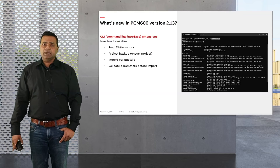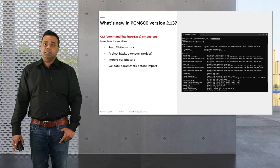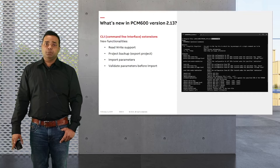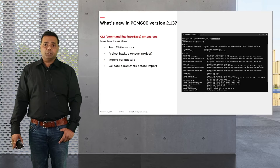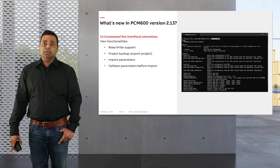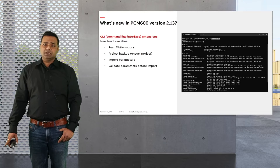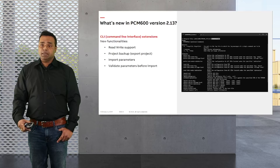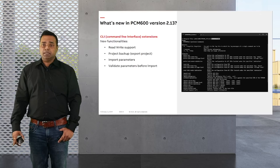Command line interface as a functionality has been available in PCM 600 for a while. Now with PCM 600 2.13, a few more capabilities are introduced — for example, read/write support, project backup, validate and import parameters. The command line interface is quite useful in that commands can be listed in a batch file and then executed.